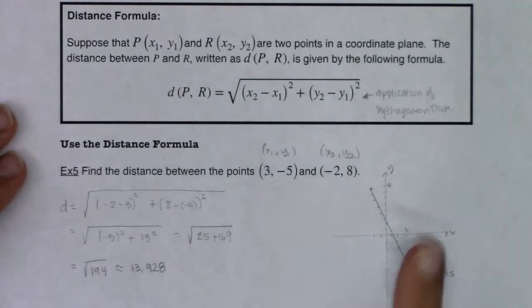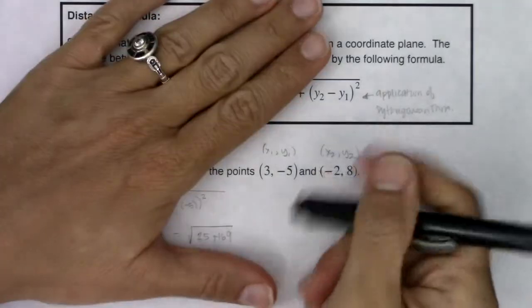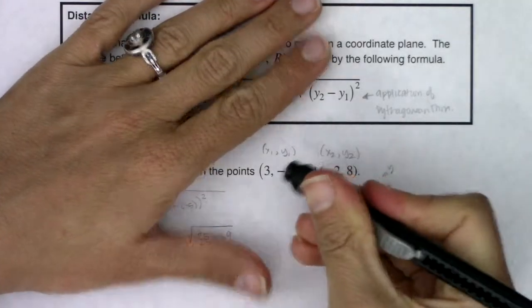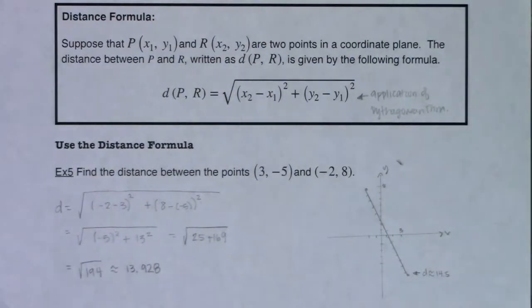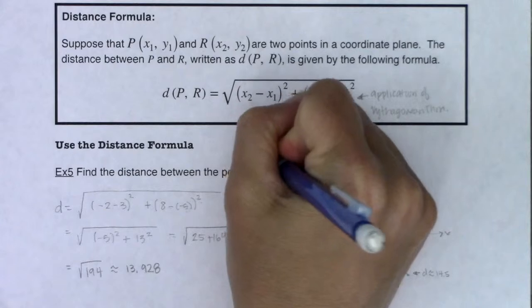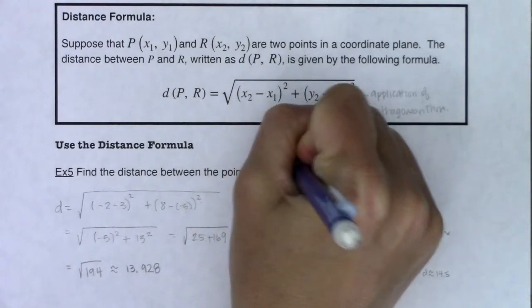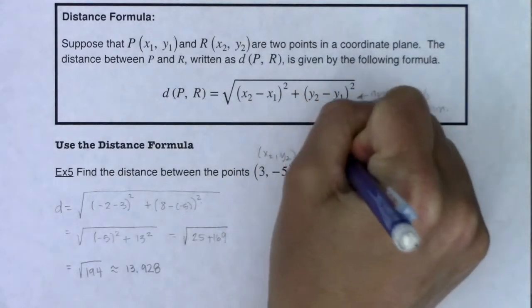Alright, now I want to rework this to see what would have happened, would our answer have differed if I had called the first point x2, y2, and the second point x1, y1. So let me try this now.